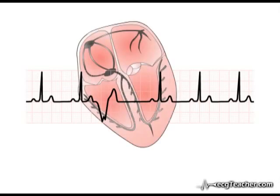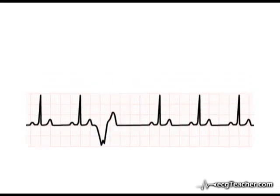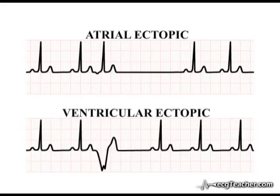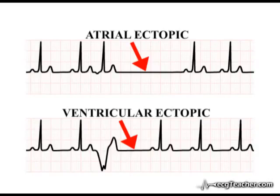As the sequence of depolarisation is deranged, the pattern of repolarisation is also abnormal, manifesting as a lack of concordance between the ectopic QRS complex and the associated T wave. Looking at both of these rhythm strips, you will notice that the atrial and ventricular ectopic are followed by a pause before the next sinus discharge. There are, however, important differences between the nature of this pause in the case of atrial and ventricular ectopics. Understanding these differences will help us when dealing with more complex situations in section 5.